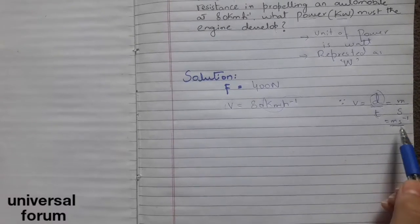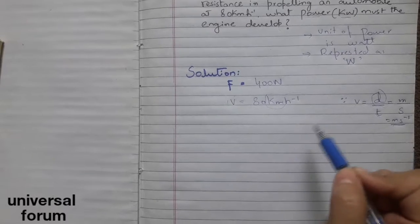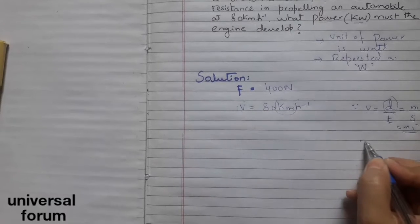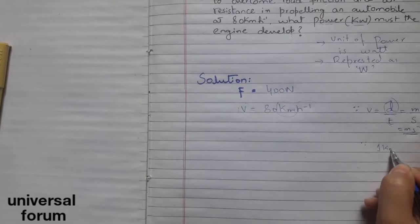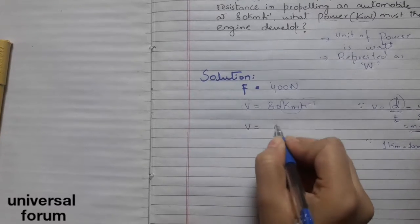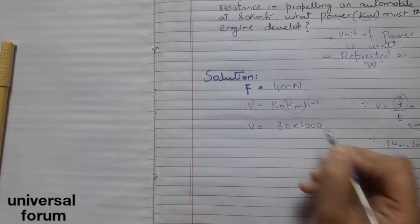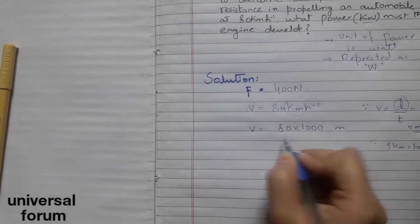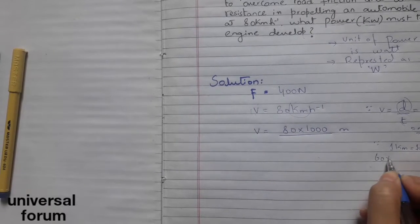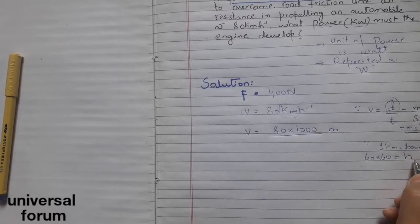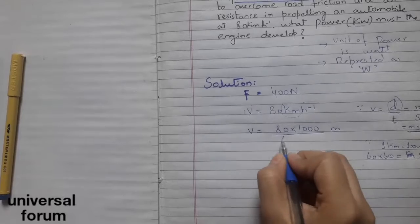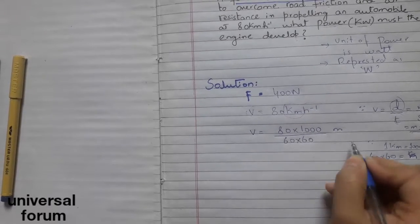Velocity is meters per second in SI units, so I'm going to convert. As we know that one kilometer equals one thousand meters, so I'm multiplying 80 into one thousand to convert to meters. As we know that 60 into 60 equals one hour, so this converts into seconds.